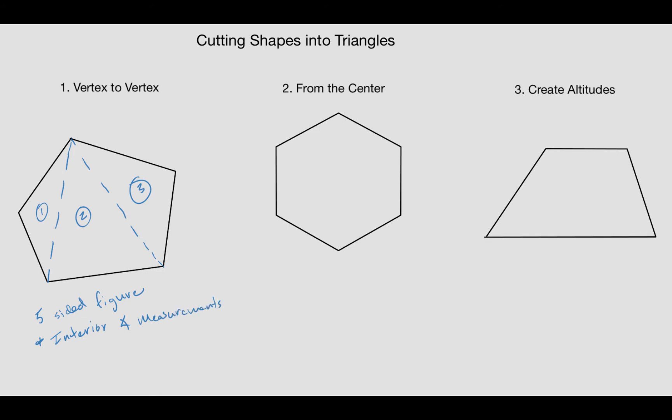Another way that we can cut these things up is to actually start from the center. One thing I'll mention is this works really well with regular polygons. It's not to say you can't find the center of a non-regular polygon, but it works best for this. We just draw these radii, and yes, polygons do have radii or multiple radiuses.